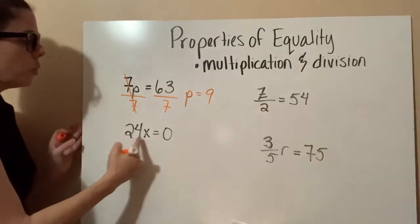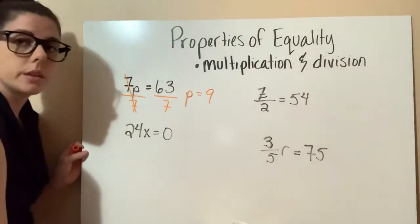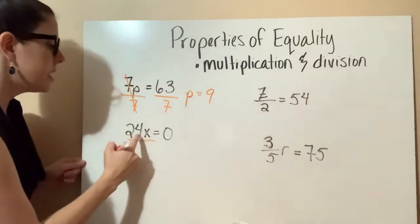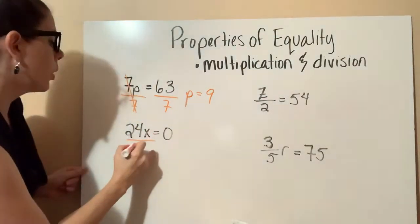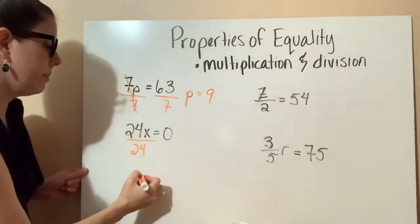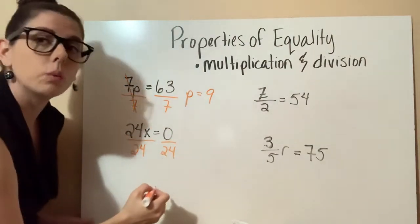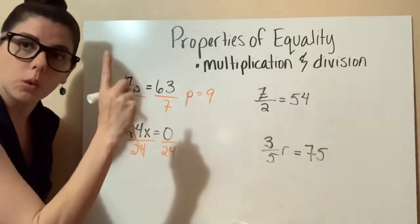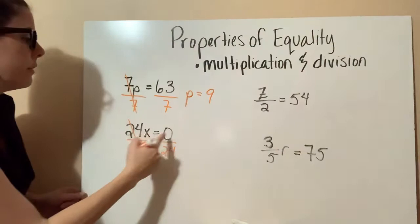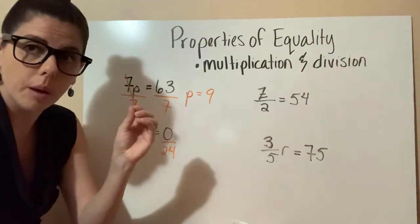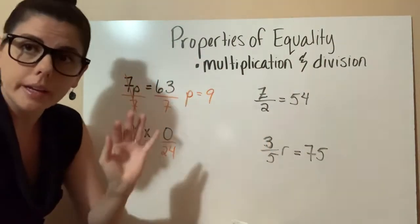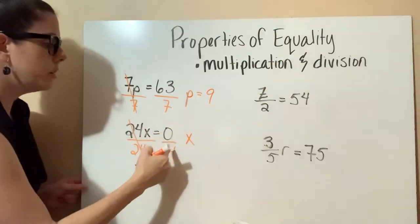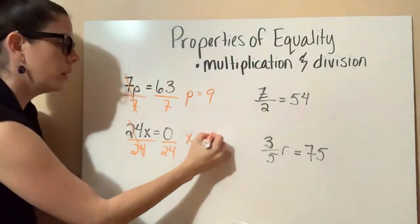On our next one, we have 24 times x equals 0. Again, because we're multiplying 24 and x, we're going to divide. Whatever we're multiplying the variable by, we divide by that same thing on both sides. So 24 divided by 24 cancels out, equaling 1. Then we have 0 divided by 24 — remember our zero properties: 0 divided by anything equals 0. So x equals 0.